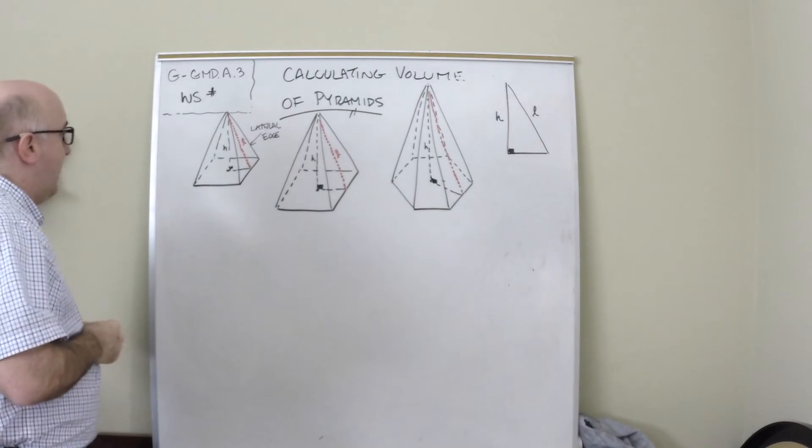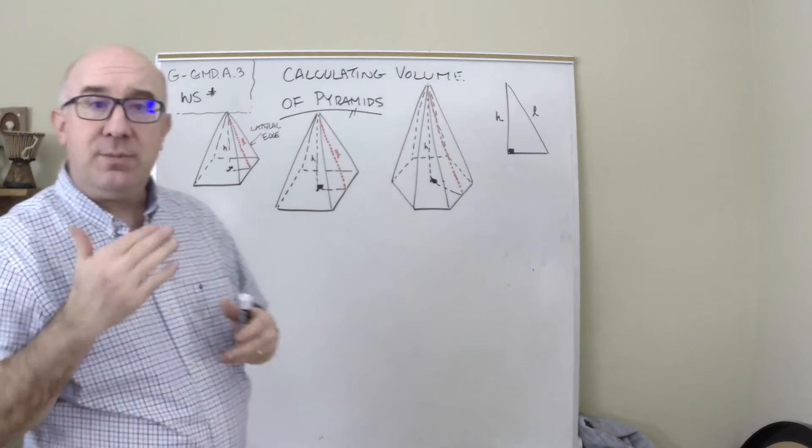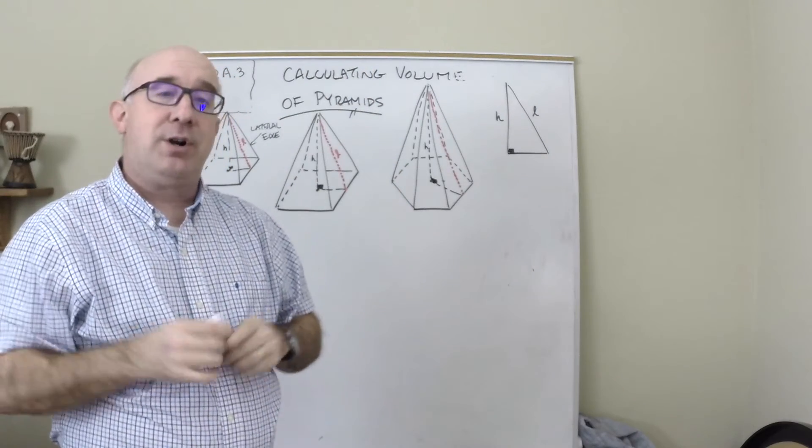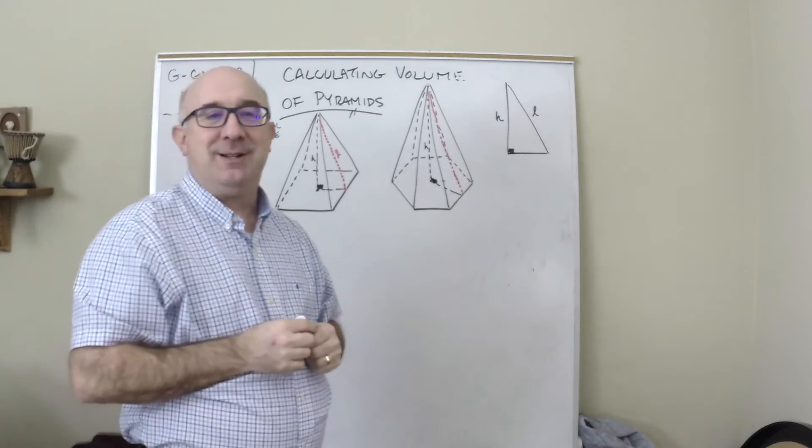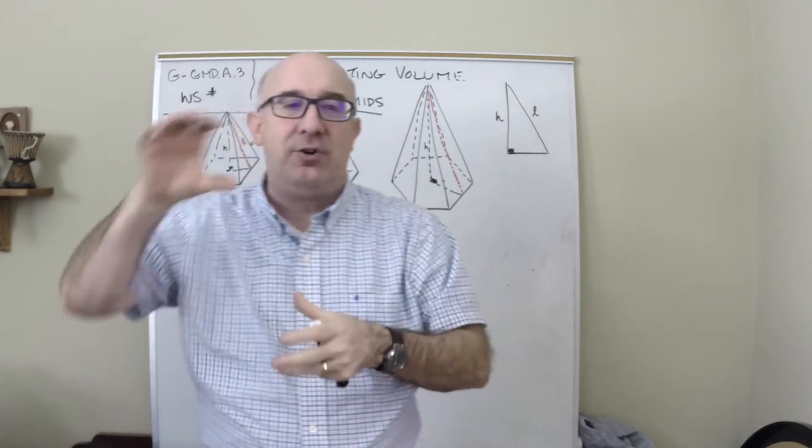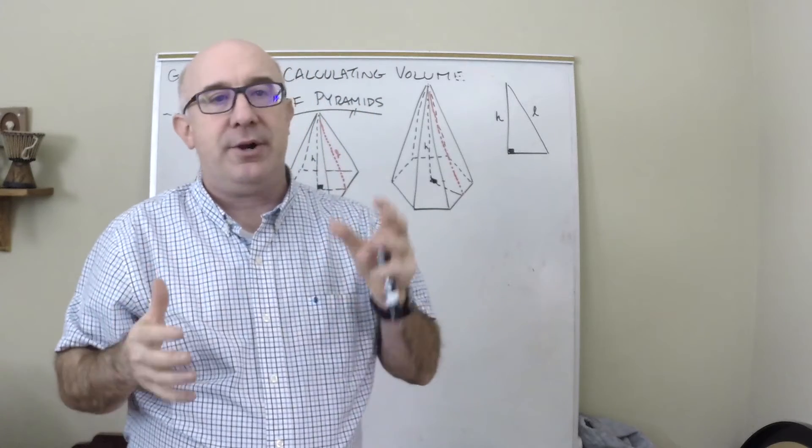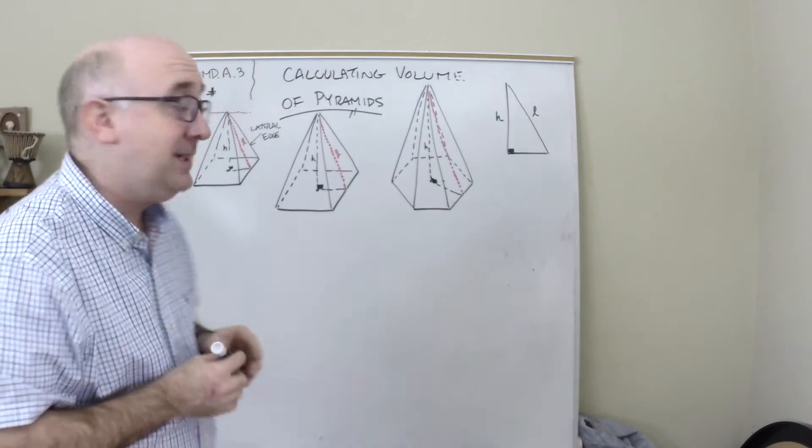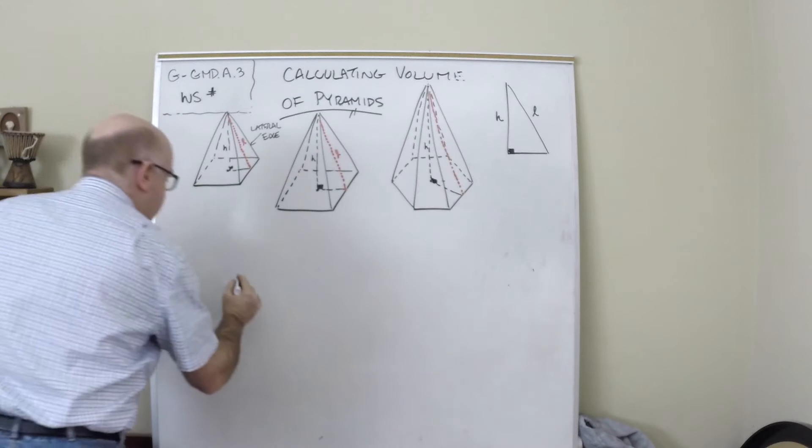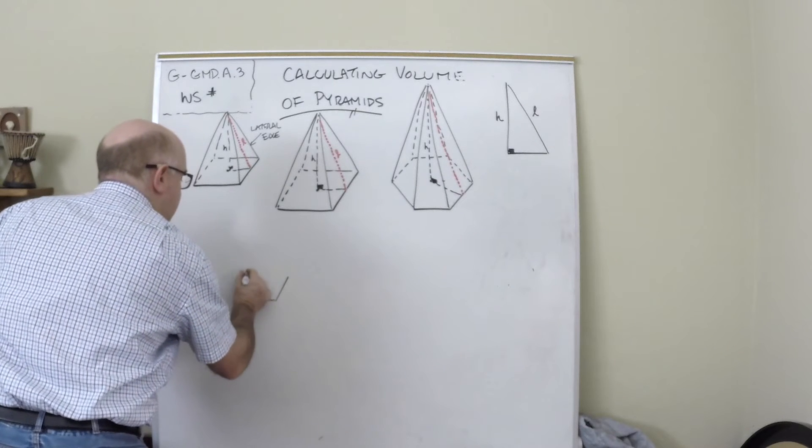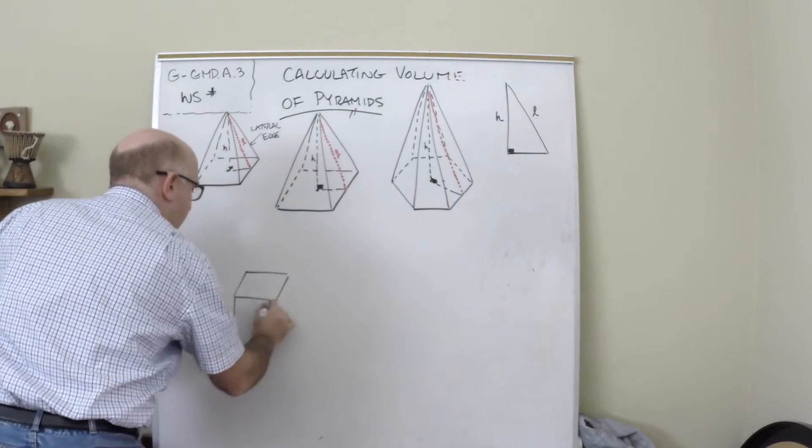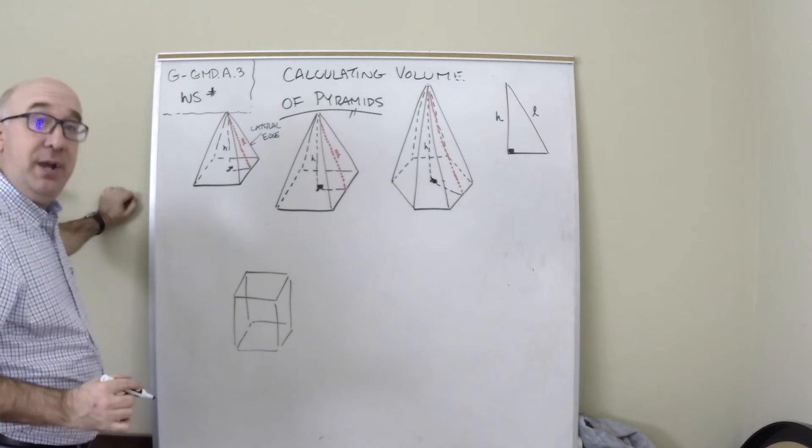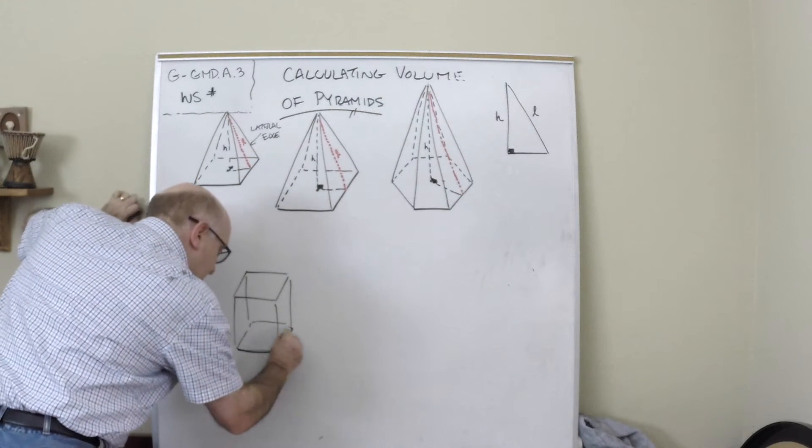Let me show you the relationship here. Because we're not going straight up like in a prism, we are coming to a point. We would do an experiment with volume, beans, or water to determine the relationship. If we take the pyramid that fits inside a prism and made it into a pyramid, it would be exactly one-third of the total volume.